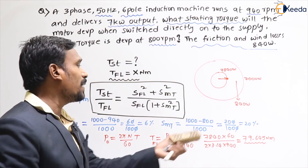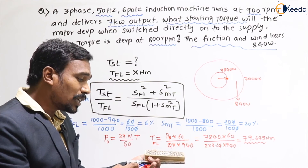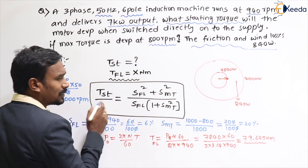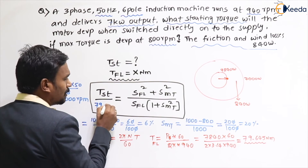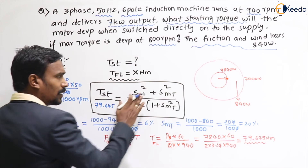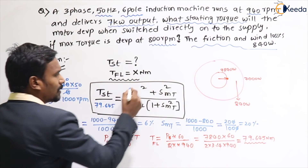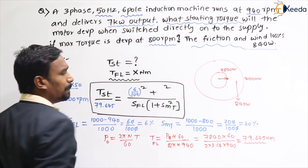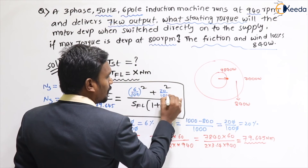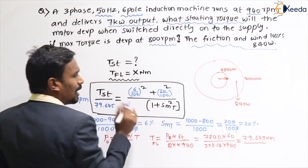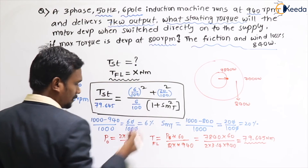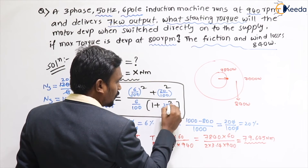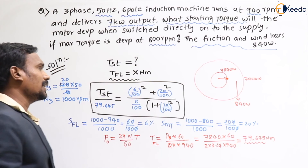The full load torque is 79.645 N·m. Now substitute all values into the derived formula. Full load slip is 6%, slip at maximum torque is 20%. We substitute: starting torque = 79.645 × (s_fl² + s_mt²) / (s_fl × (1 + s_mt²)).